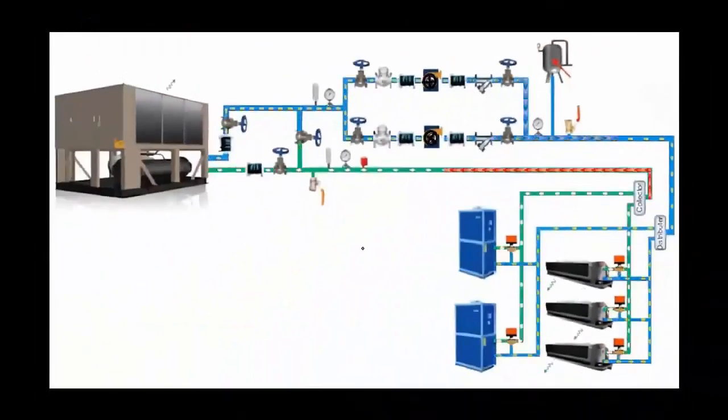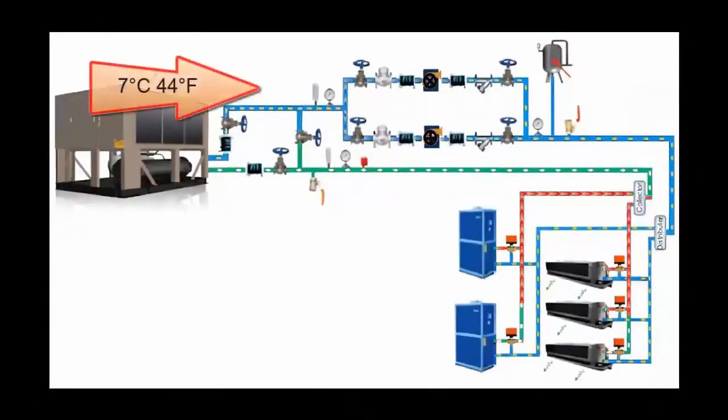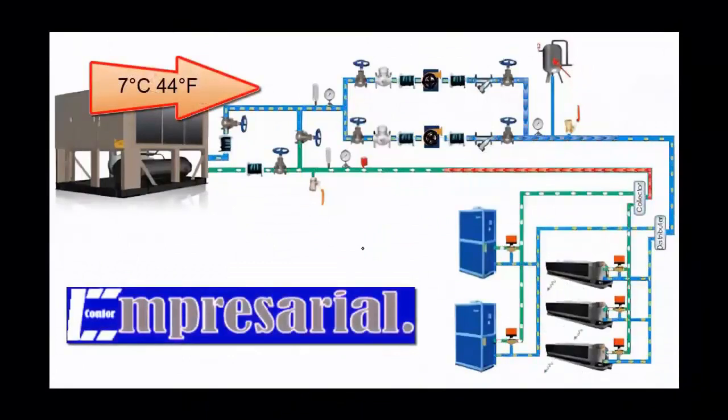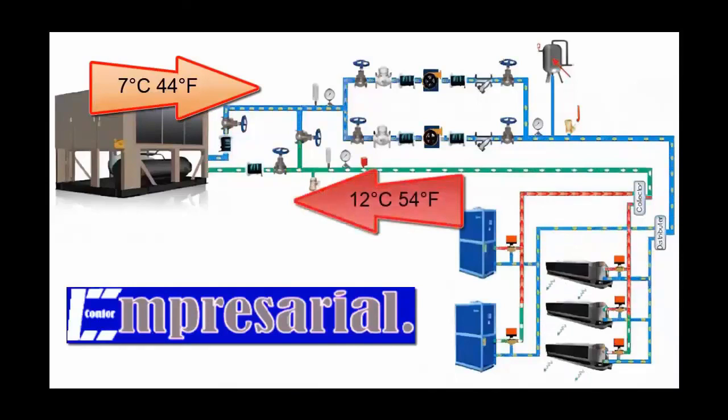13. The supply pipe carries the chilled water to the application. In this case at 7 degrees Celsius or 44 degrees Fahrenheit. 14. The return pipe takes the frozen water back to the chiller. In this case the water returns to 12 degrees Celsius or 54 degrees Fahrenheit.